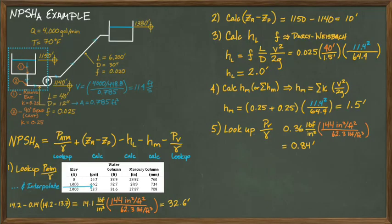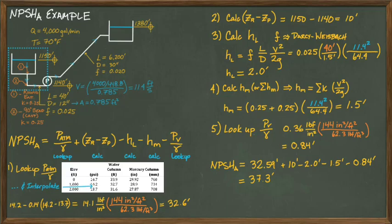For the final step, we calculate the net positive suction head available by just adding and subtracting numbers we picked up along the way. 32.9 feet plus 10 feet minus 2 feet for friction losses minus 1.5 feet for the minor losses minus 0.84 feet for the vapor pressure head, which is 37.3 feet. Given that we typically use a 5-foot buffer between the net positive suction head available and the net positive suction head required, this result tells us we cannot select a pump whose net positive suction head required is greater than 32.3 feet, at least for potable water application.